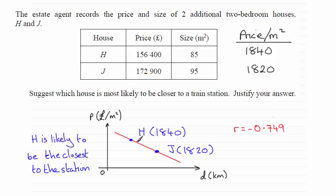And can you see that for H, the value of D would be smaller than the value of J? So it is closer to the station.